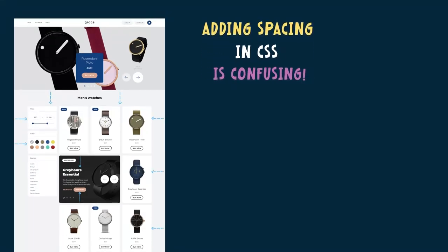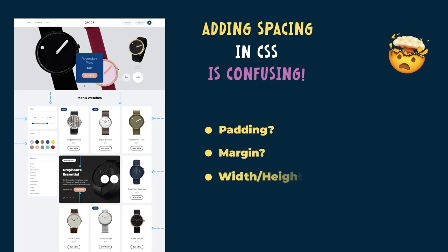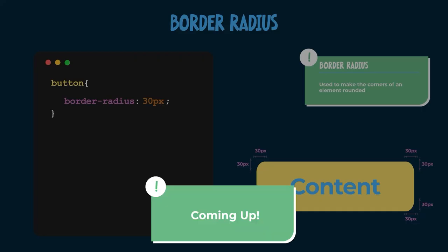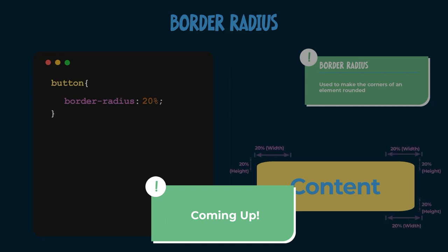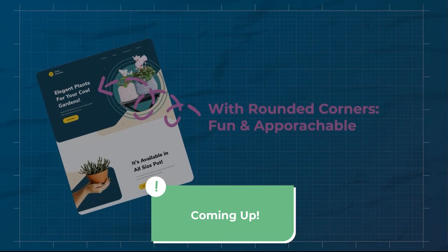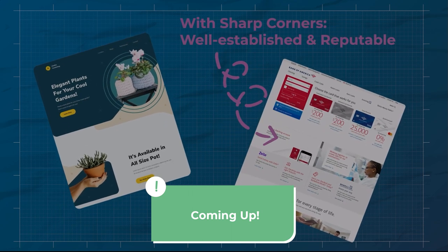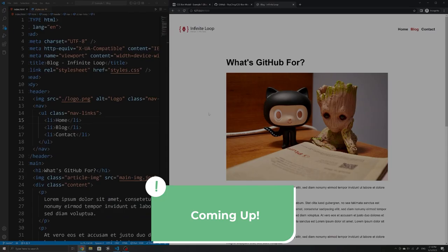Adding some spacing using CSS can be really confusing — the padding, the margin, and not just setting the element size manually. If you have encountered the same problem before, don't worry. In this video, I'll go through what exactly the CSS box model is, as well as how to use it with actual real-world examples, so you know when and where to use what.